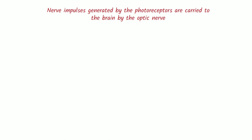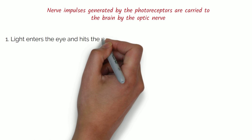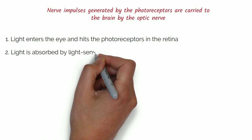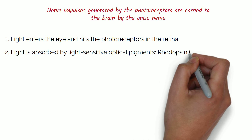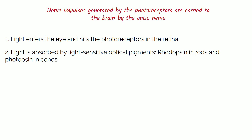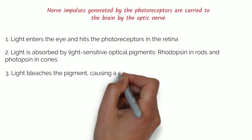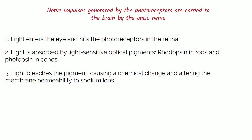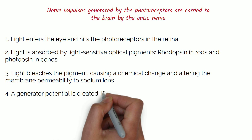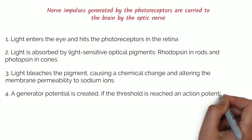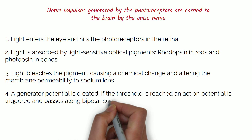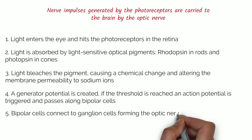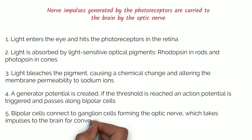Here is how nerve impulses generated by photoreceptors are carried to the brain by the optic nerve. Light enters the eye and hits the photoreceptors in the retina. Light is absorbed by light-sensitive optical pigments — rhodopsin in rods and photopsin in cones. Light bleaches the pigment, causing a chemical change and altering the membrane permeability to sodium ions, creating a generator potential. If threshold is reached, an action potential is triggered and passes along the bipolar cells. Bipolar cells connect to ganglion cells, forming the optic nerve, which takes the impulses to the brain for converting the signals into visual information.